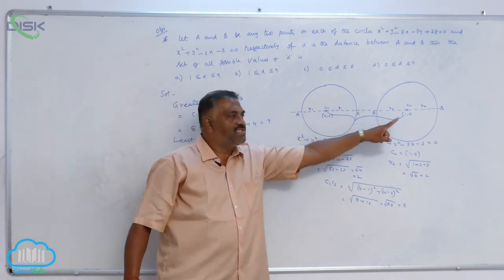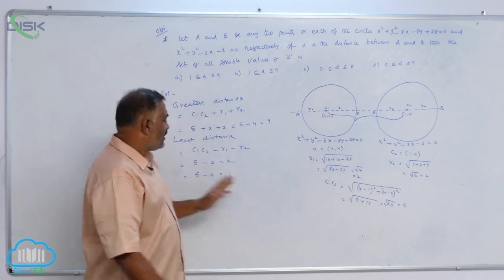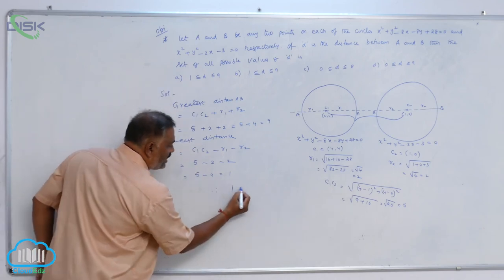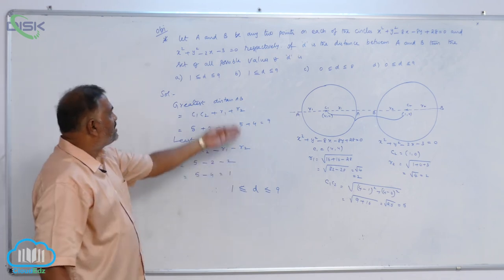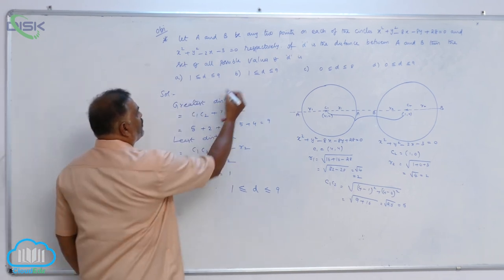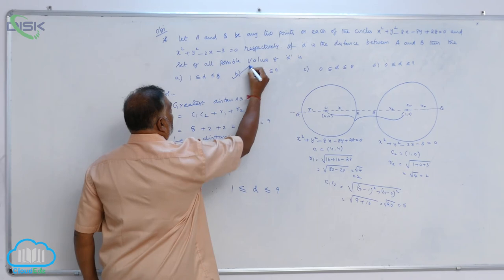So this is the greatest distance and this is the least distance. Therefore, 1 ≤ D ≤ 9. From this, it is very clear that option B is correct.